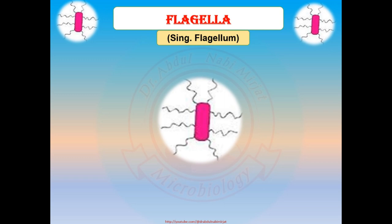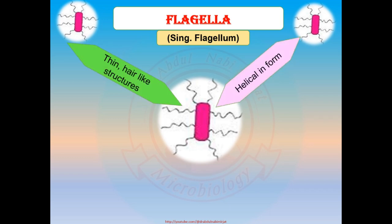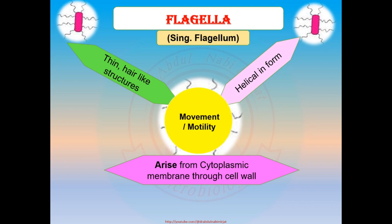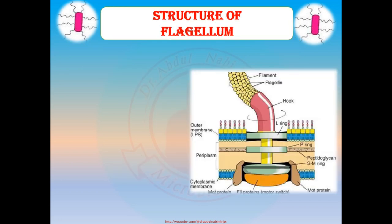First, let's start with the flagella. What are flagella? These are hair-like structures, helical in form. Flagella arise from the cytoplasmic membrane through the cell wall and play a role in movement or motility of a bacterium. Based on presence or absence of flagella, bacteria are classified as motile and non-motile.